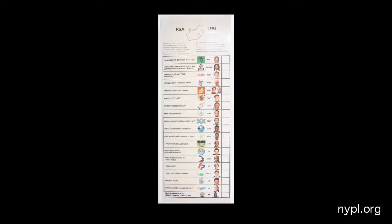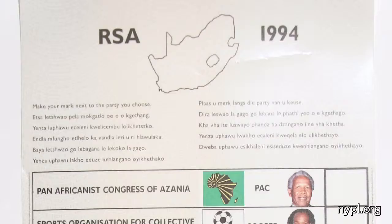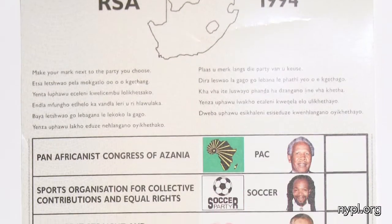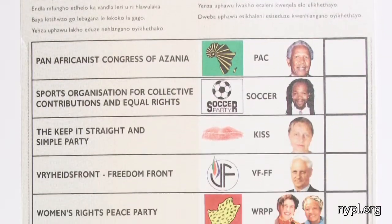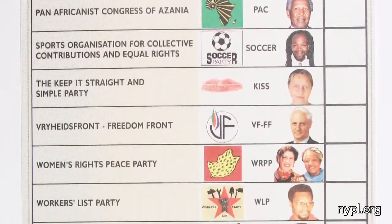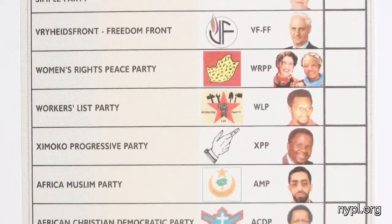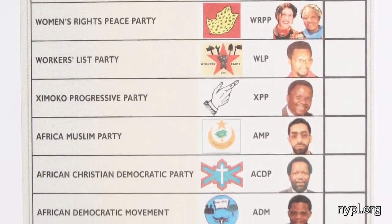Particularly moving, I thought, was a ballot from the first election. We see here that it's a long ballot with many images of all of the candidates — not like our presidential election where there are only two or three candidates.